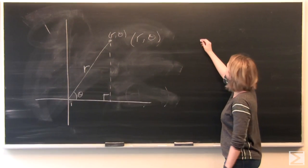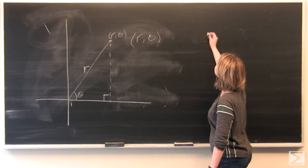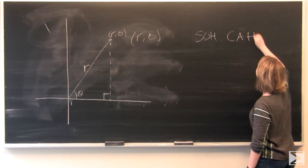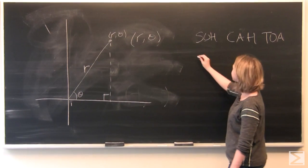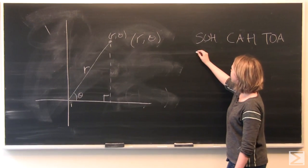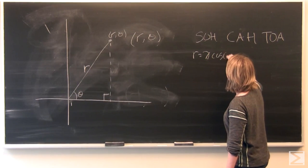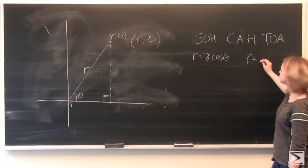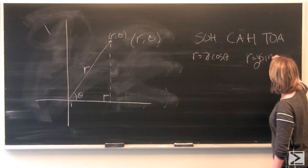From our SOHCAHTOA rules, our R is going to be equal to x cosine theta. Our R is also going to be equal to y times sine theta.